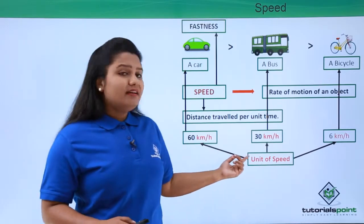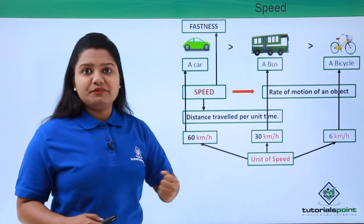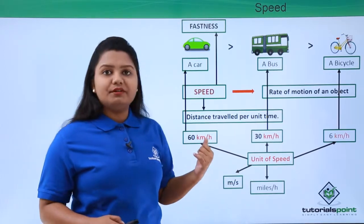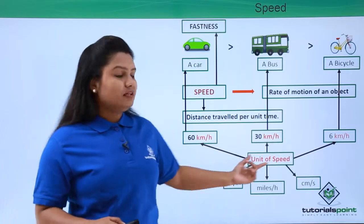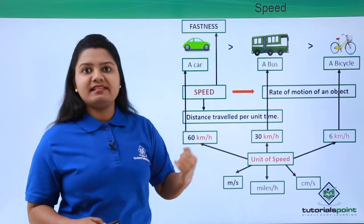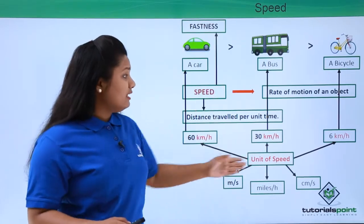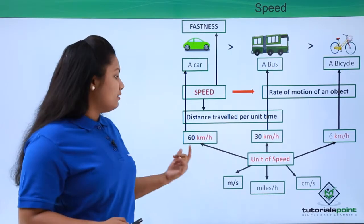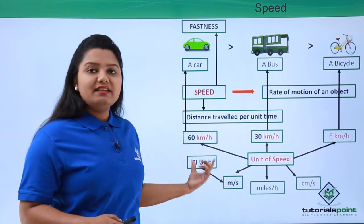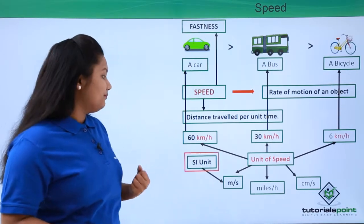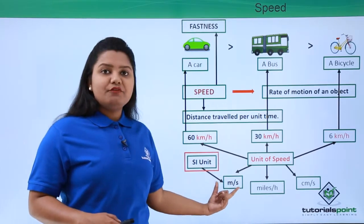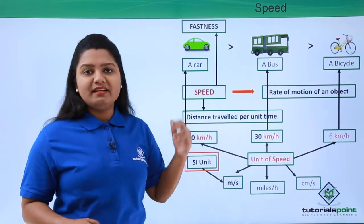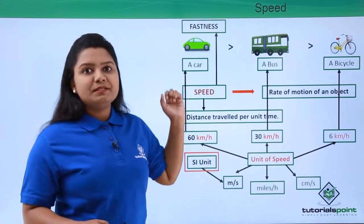There can be many other units of speed — for example, meters per second, miles per hour, or centimeters per second. Among all these units of speed, meters per second is what we call the SI unit of speed, and this is the unit we will focus on whenever we solve numerical problems based on speed.